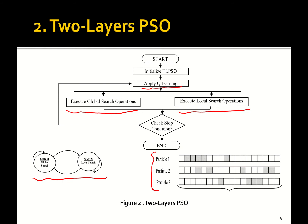Another key idea is that we use a micro swarm — only three particles — compared with the standard PSO which works with a large number of particles. The main difference between global and local search is that in local search, we update and modify only randomly selected dimensions, which enables fine-tuning of the particle, rather than updating all dimensions as in global search.